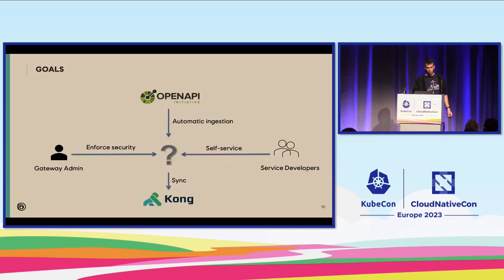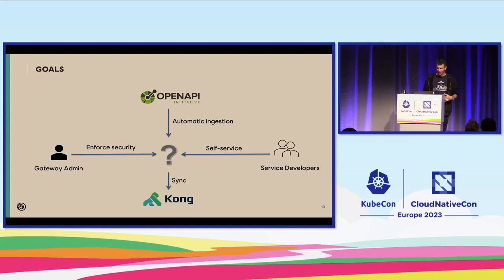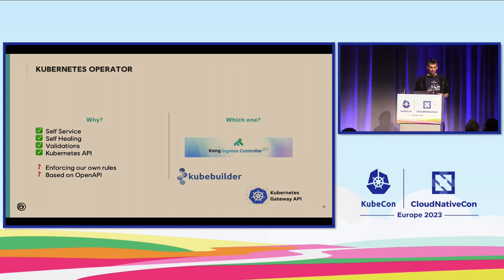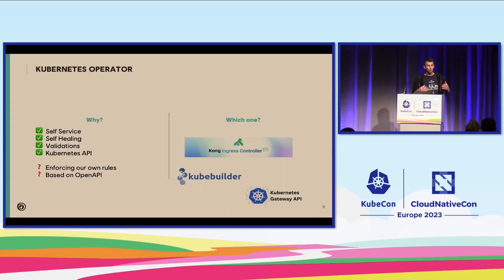So just to have a visual recapitulation: on one side, we have the gateway admin that wants to enforce specific rules. On the other, we want self-service for the service developers. We want to automatically ingest our OpenAPI documents, and something in the middle that will do some magic and synchronize that to Kong. So the question is, what will be in the middle? Why not a Kubernetes operator? Because we are running on Kubernetes, it provides self-service, self-healing, and validation. It's built on top of the Kubernetes API that everybody is used to — kubectl and so on. The main question is how can we enforce our own rules and automatically ingest the OpenAPI document to generate routes based on that?